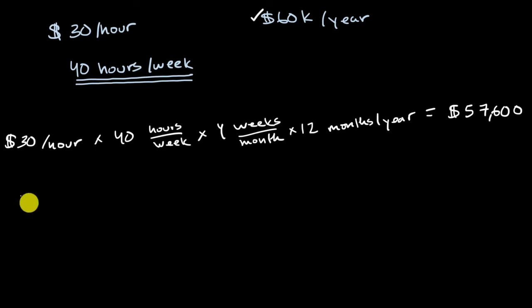So the correct way to do this would actually be to take your $30 an hour, multiply it times 40 hours in a week, and then to get to the year, multiply that times 52 weeks in a year. And if we do that, we're going to get a different number.